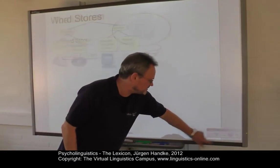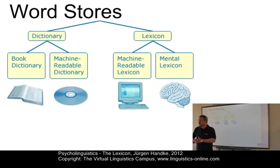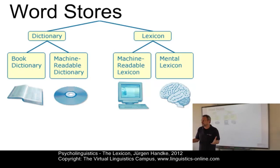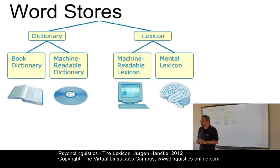Let's start with the general taxonomy of word stores. Language is a communication system employing arbitrary symbols. These symbols, which are normally words, have to be stored somewhere. The following different types of word stores exist.